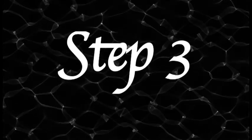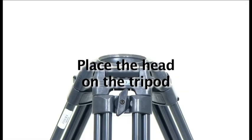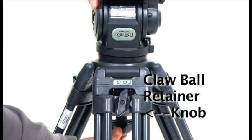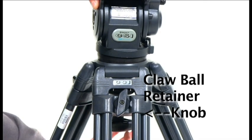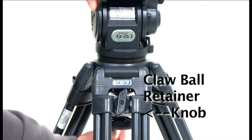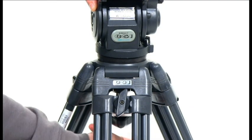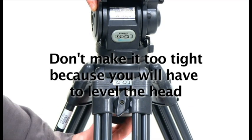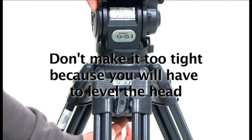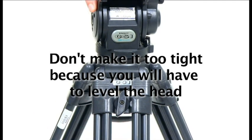Step number 3. Now that the tripod legs are secured on the dolly, it's time to put on the tripod head. First place the tripod head on top of the legs and use the claw bog retainer knob to secure it.